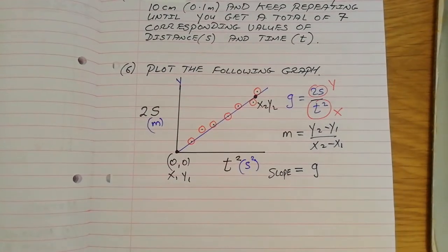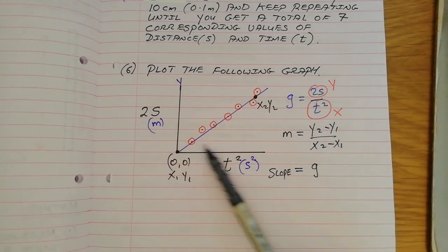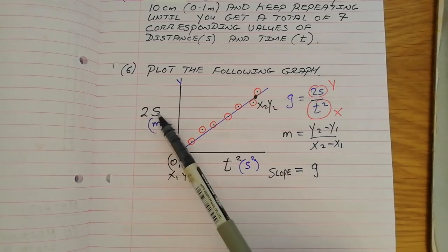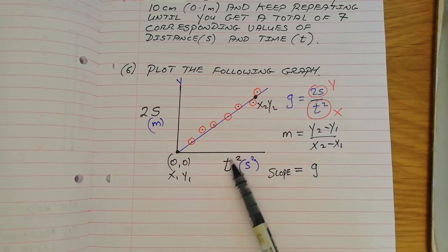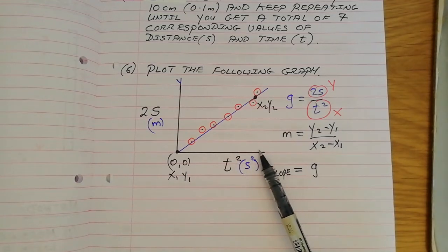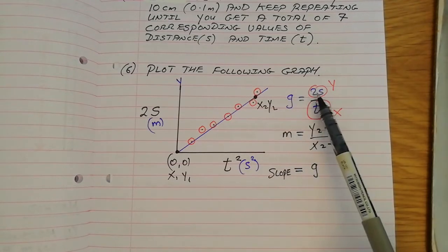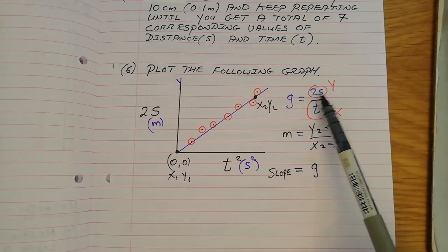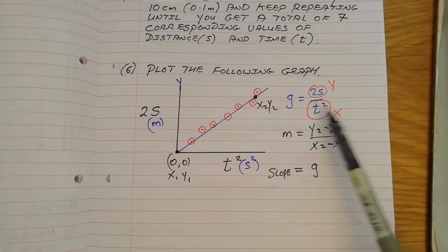We also noted that there was another way of calculating g the acceleration due to gravity using this experiment, and that was by drawing this graph here. Now, this graph has twice the distance s on the y-axis and t squared in seconds squared on the x-axis. And we noted that because the formula was in this shape, with 2s on the y-axis, what's on top of the line on the y-axis, what's under the line, the t squared on the x-axis,